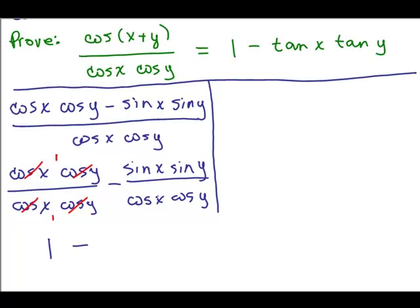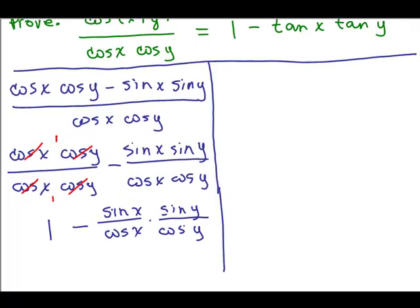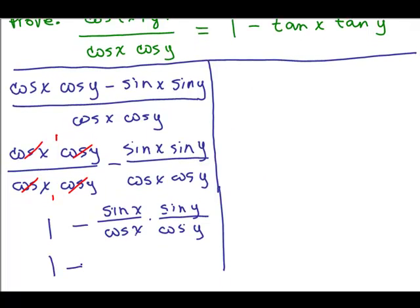I have a sine X over cosine X and I have a sine Y over cosine Y. So the sine X over cosine X, if you want to show that separately first, you could say this is the sine X over cosine X times the sine Y over cosine Y.